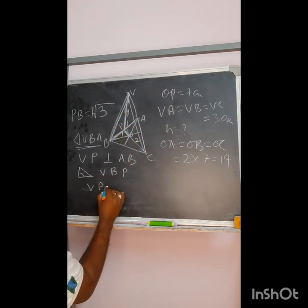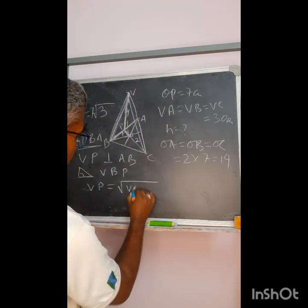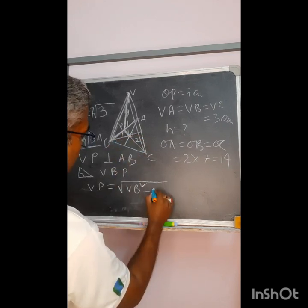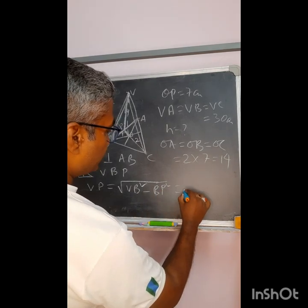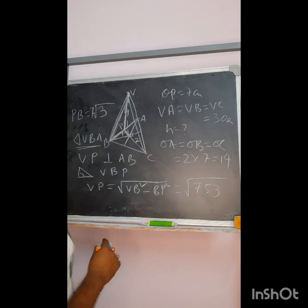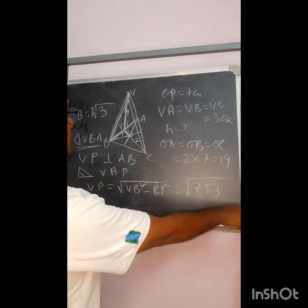So VP will be equal to under root of VB square minus PB square. And if you easily you can put the values you will get something like this, 7 root 53 will be the value I will get for value of VP. Up to this is okay.